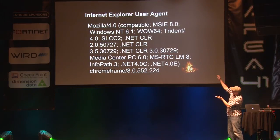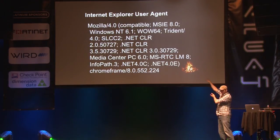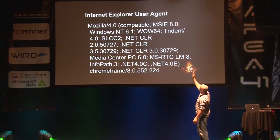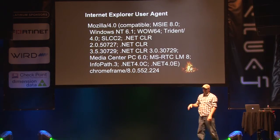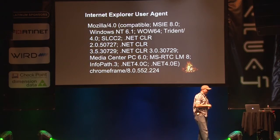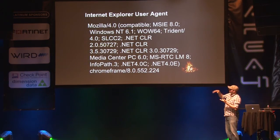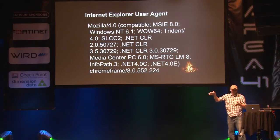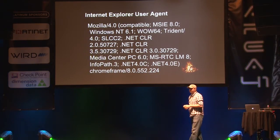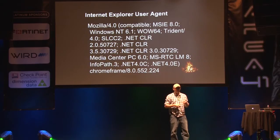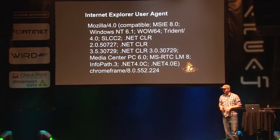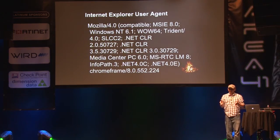Everyone knows what this is — this is what all of your users send to every website they go to: what version of .NET they're running, what version of InfoPath, all of that. This is called a user agent. If you haven't seen a user agent before, it's in HTTP traffic. When a browser sees Java code in a web application, it does something weird — it sends all that information.